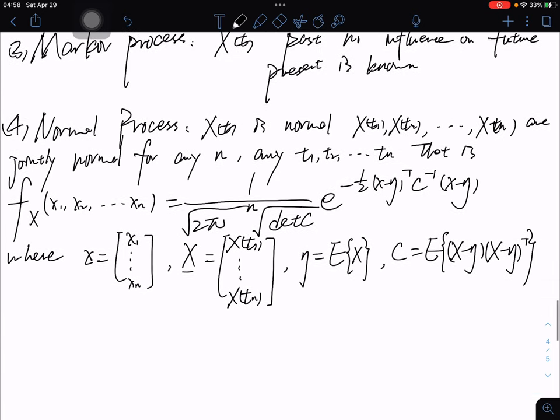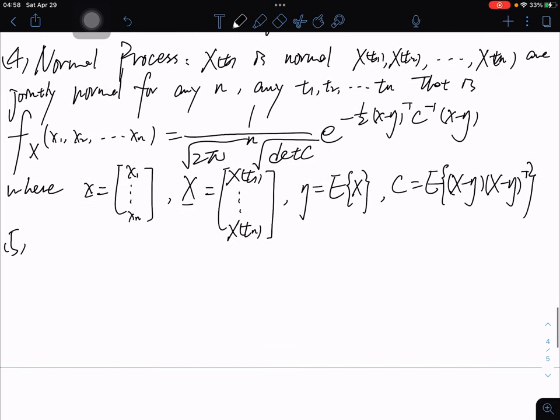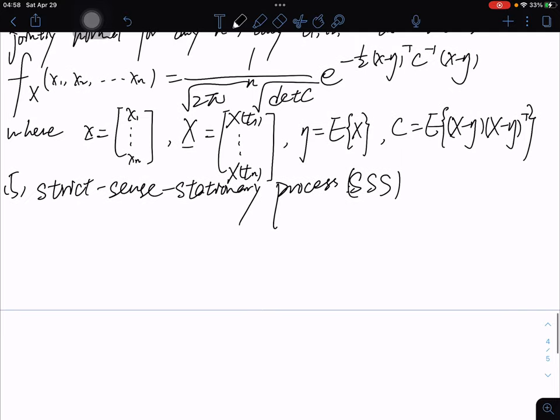Right. And the fifth, a process is said to be a strict sense stationary process, also called SSS process, if it satisfy that statistics is not affected by a shift in the time, not influenced by time shift.